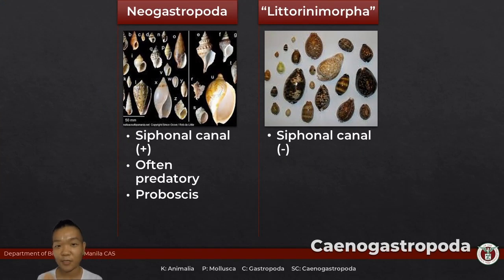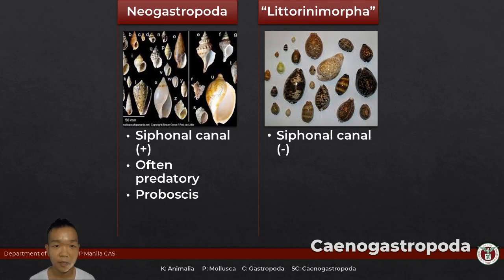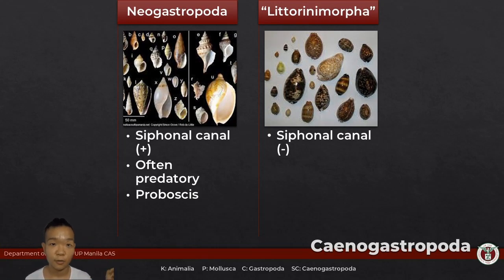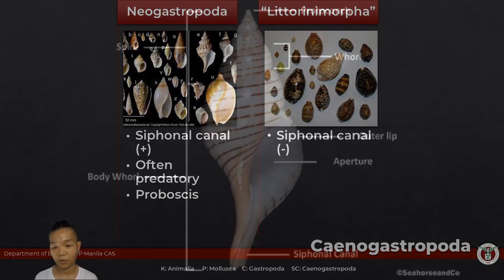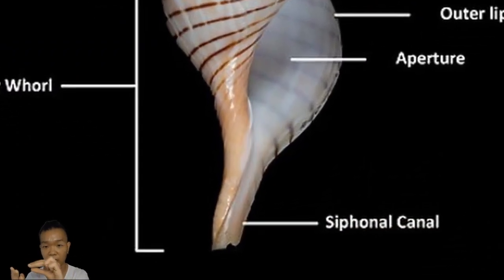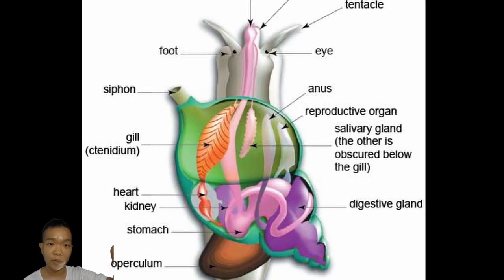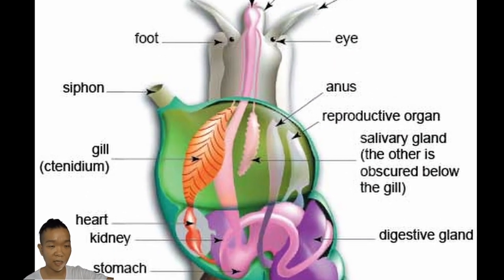Xenogastropoda — a lot of the representatives for the lab are under this group. Their shells are never nacreous. You can subdivide these further into Neogastropoda and Litorinimorpha. Neogastropods — many of them are predatory, so they have a structure called the siphonal canal. It's a part of the shell that's a little bit extended, and that's where the siphon forms out — that's where the osphradium and the gills are.